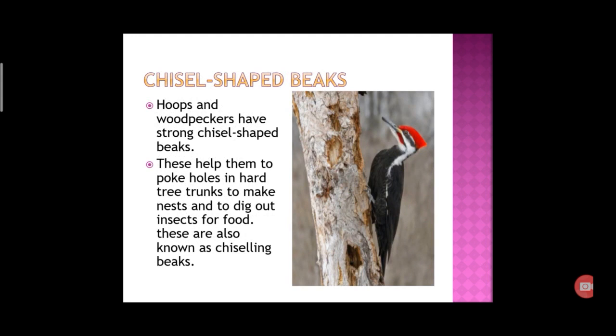Chisel-shaped beaks. This type of beak helps to make a hole in the trunk of a tree, to make nests, and to dig out insects for food. These are known as chiseling beaks. For example, hoopoes and woodpeckers.